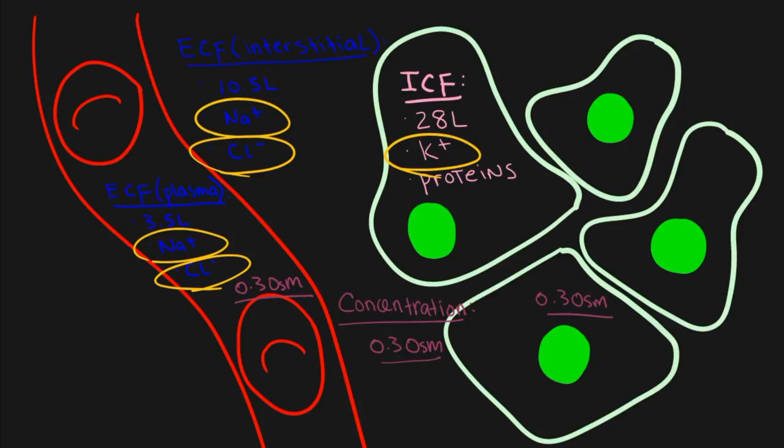Inside cells you have a high concentration of potassium compared to the outside, which has a high concentration of sodium and chloride. And one important thing that our bodies need to do is try to keep our internal environment always looking just like this.